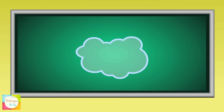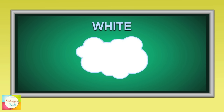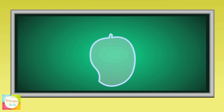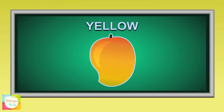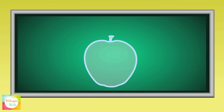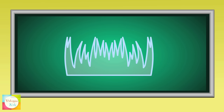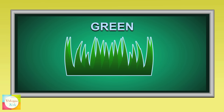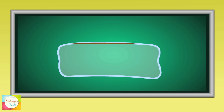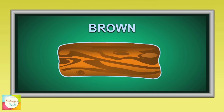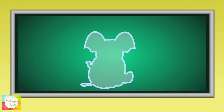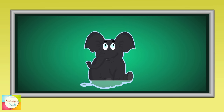The color of the cloud is white. The color of the mango is yellow. The color of the apple is red. The color of the grass is green. The color of the wood is brown. The color of the elephant is black.